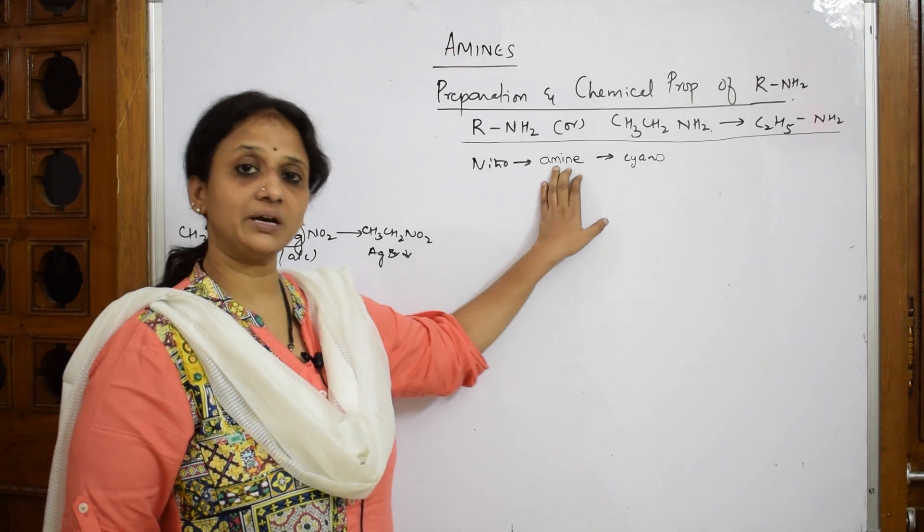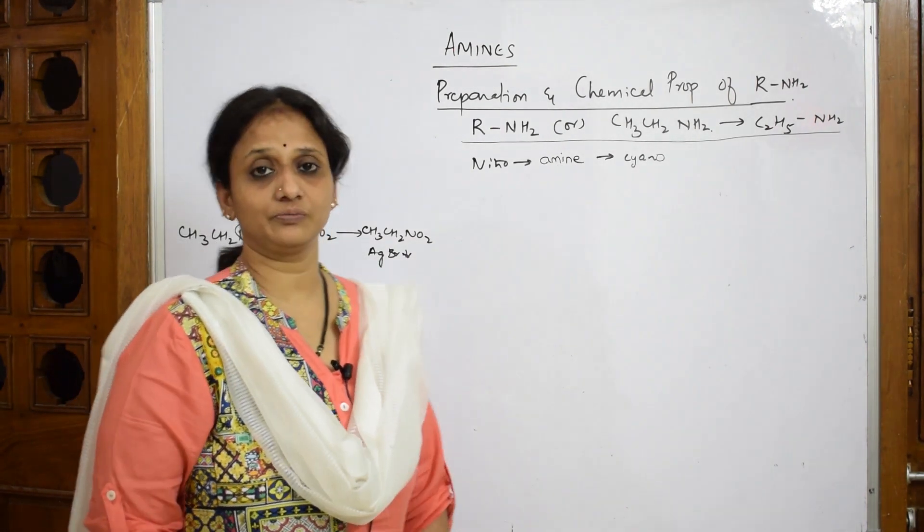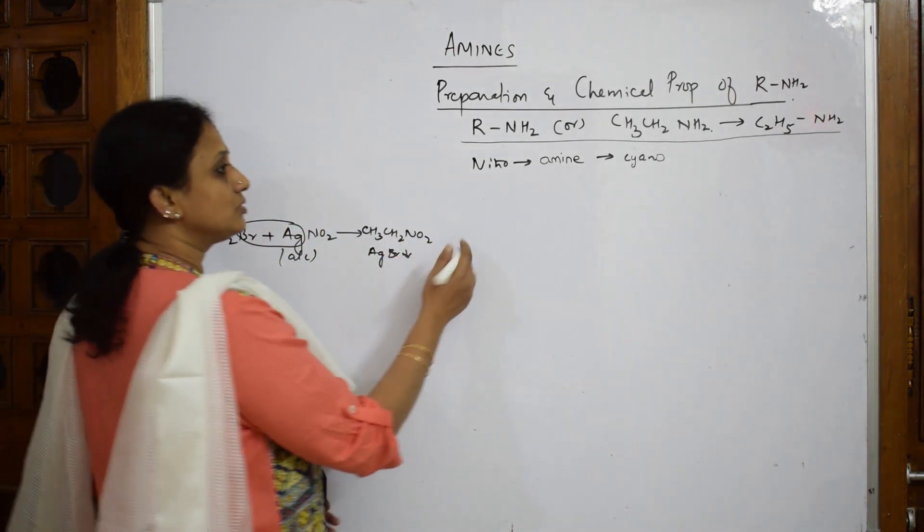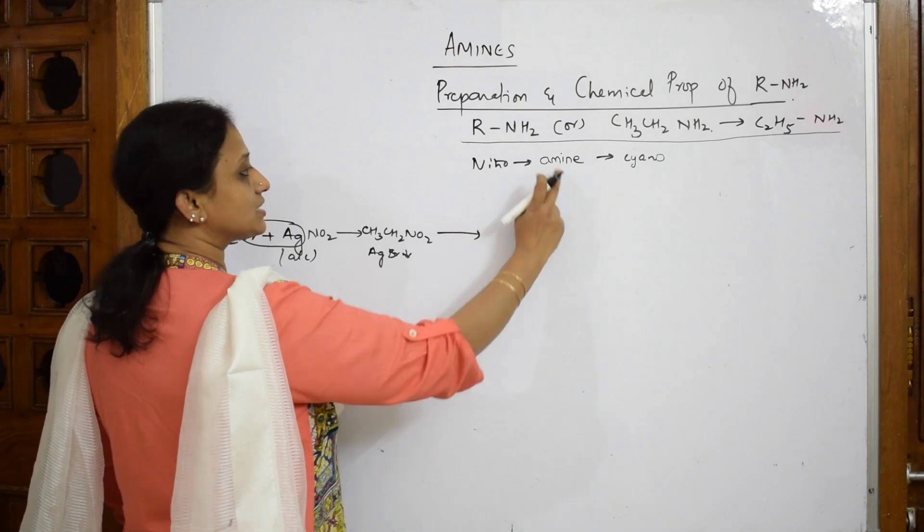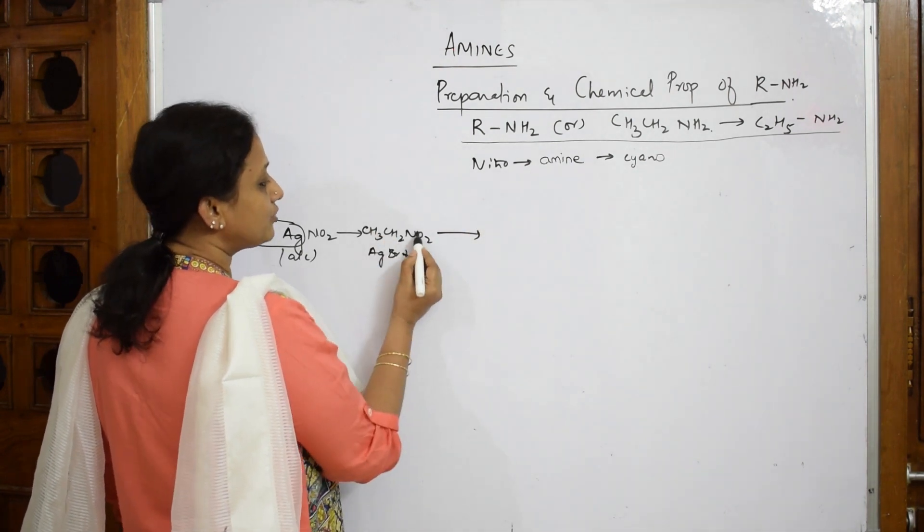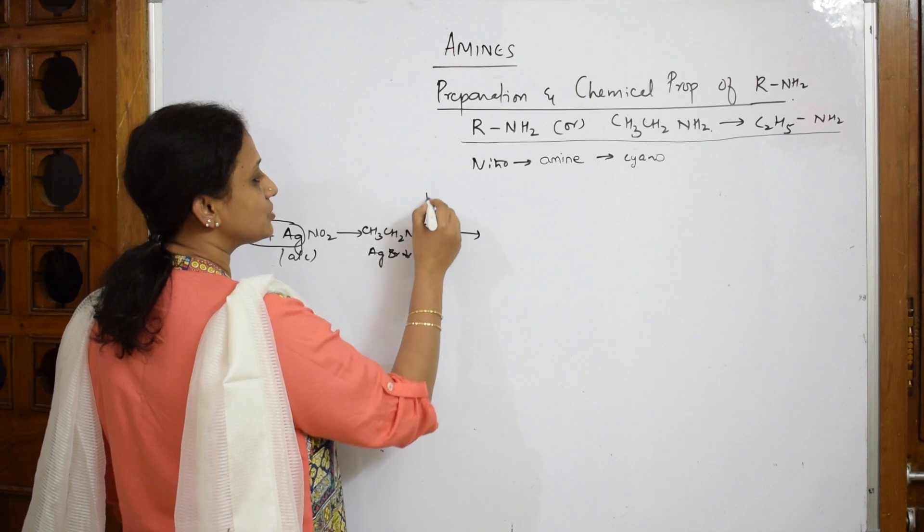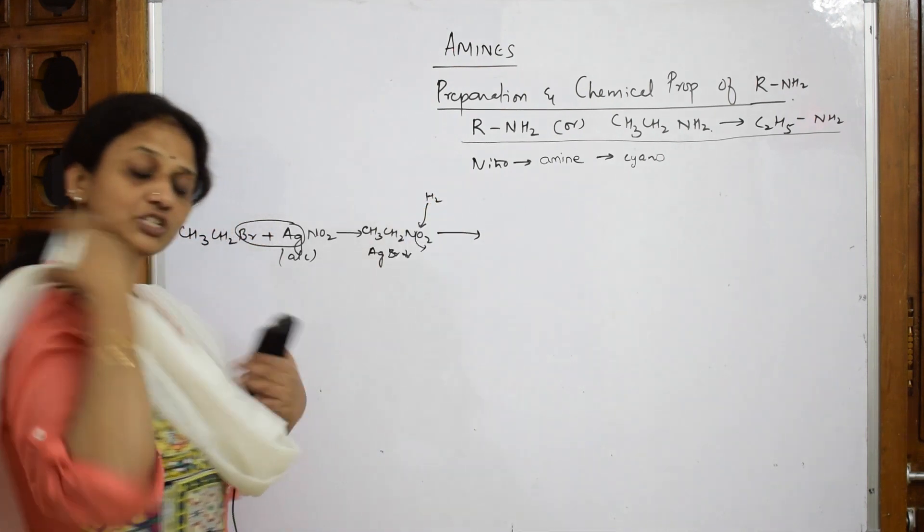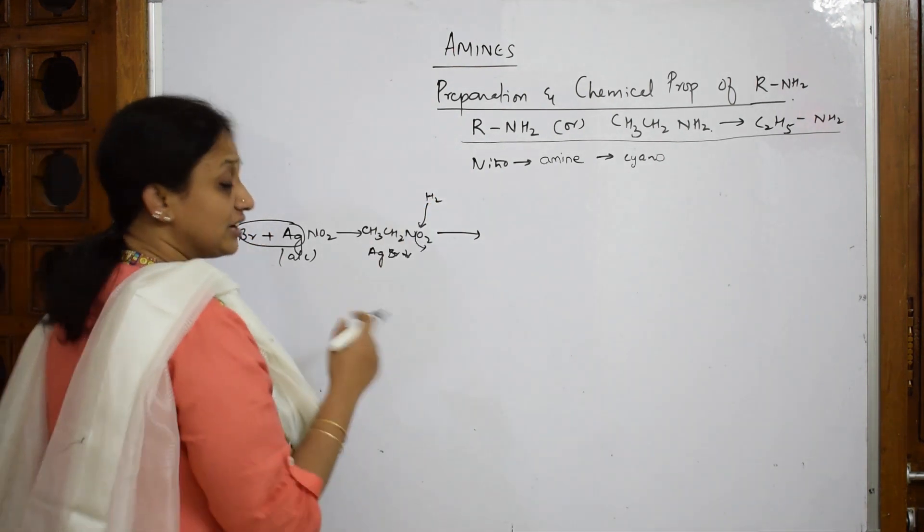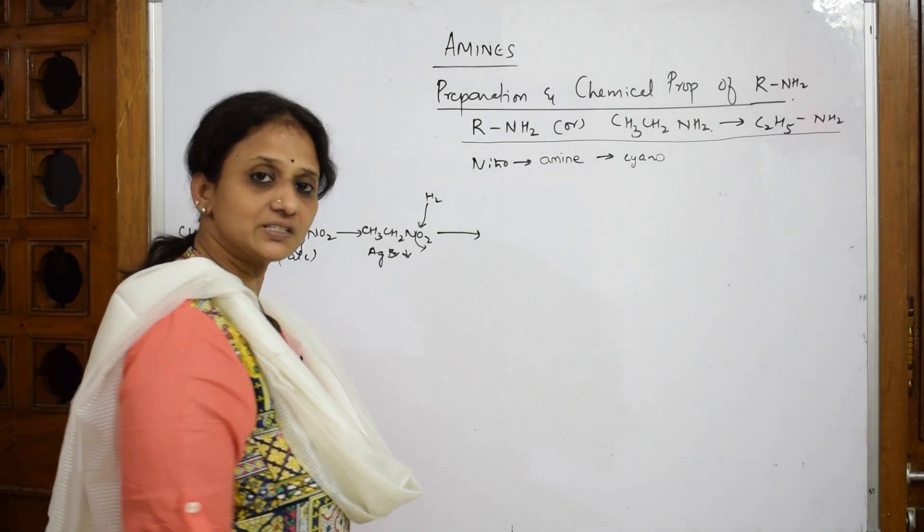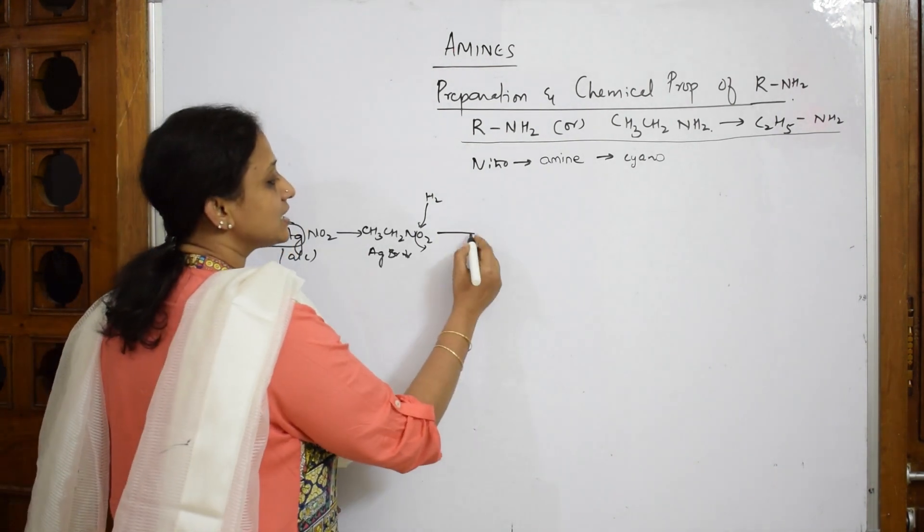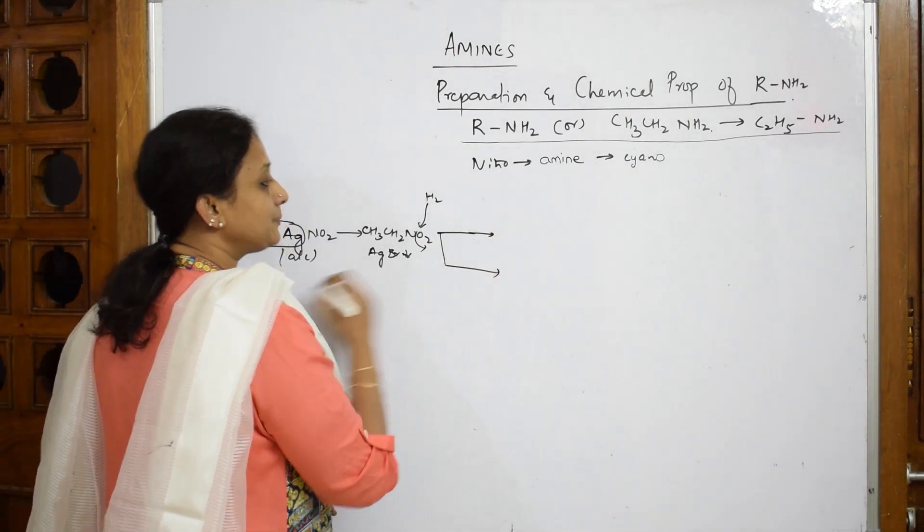I said always nitro is converted to amino, after amino only cyano. Thus nitro is going to get converted to amine. How? I have to take out this oxygen and add hydrogen. The reducing agents will give me the hydrogen.